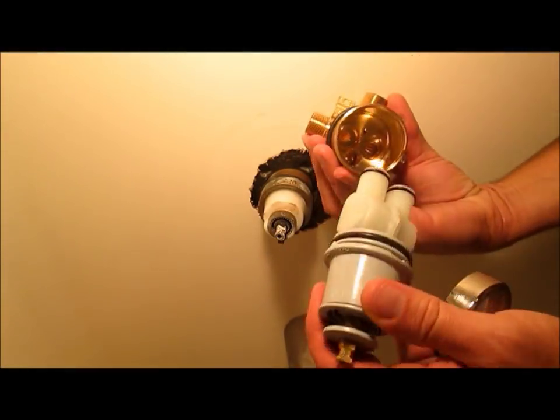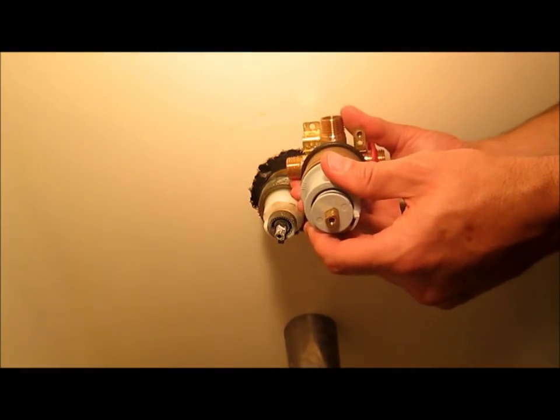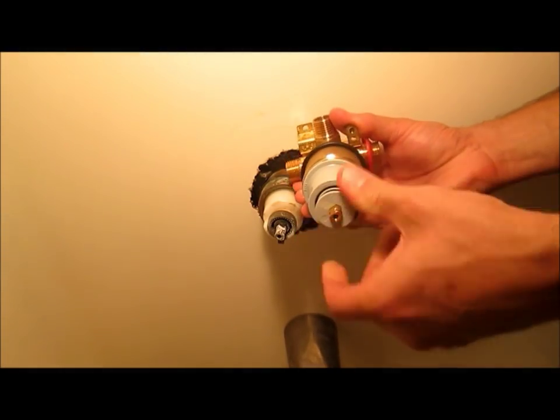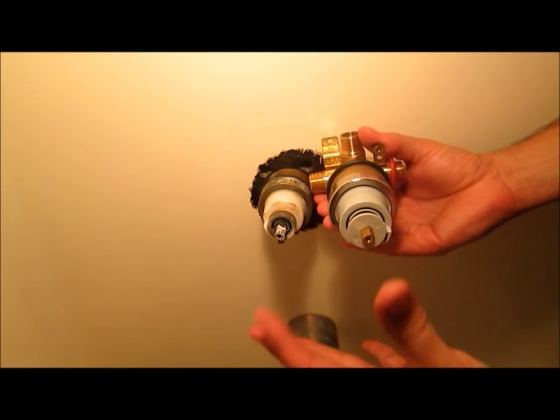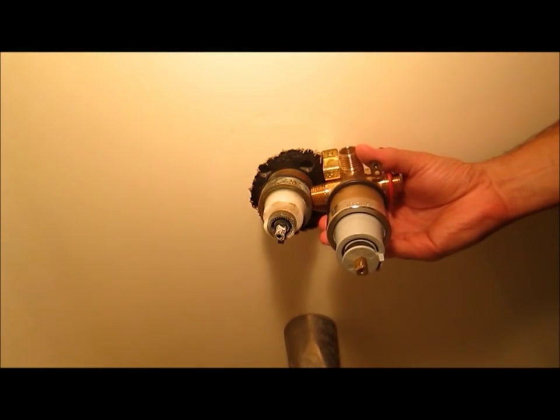And just shove it back in the same way. They're little notches so you can't really get it wrong. Just shove it back in there. Put your ring back on. And put the whole thing back together like it was before we took it apart. And you're done. That's the easy way. I hope it works that way for you.